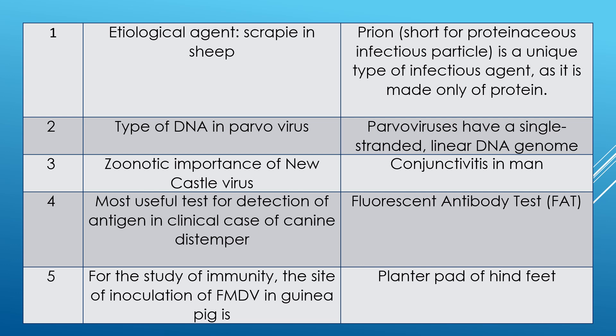Question 23: what is the zoonotic importance of Newcastle disease? Answer is Newcastle disease virus produces conjunctivitis in human beings.